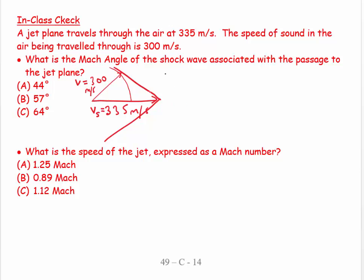So then it says what is the Mach angle? The Mach angle is the angle from the straight through direction to the shock wave. So the Mach angle will be sine theta equals the opposite which is 300 over the hypotenuse which is 335.